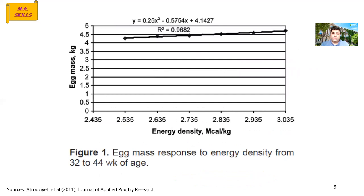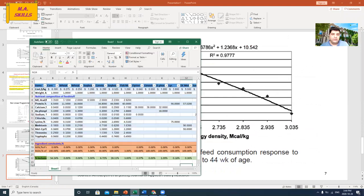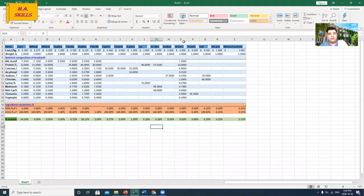If you are going to use maximum profit feed formulation for layers, you can use an egg mass equation instead of the broiler body weight regression. You also need to use the equation for feed consumption in layers. So let's fire up the Excel sheet and get started.